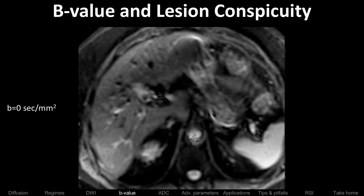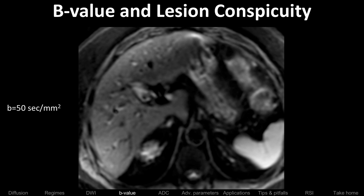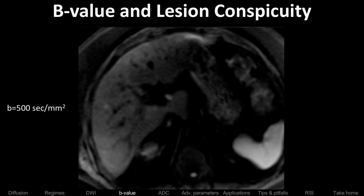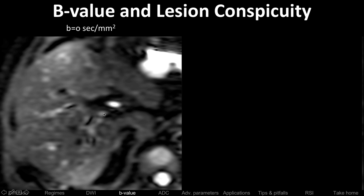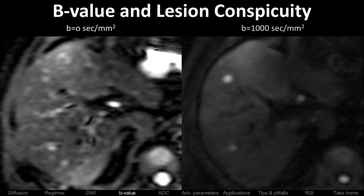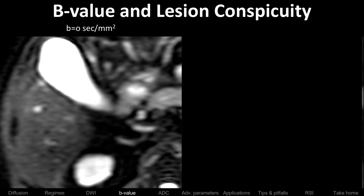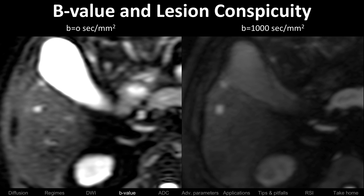Here are examples showing lesion conspicuity: no metastasis visible at B0, blood vessels starting to darken at B50, tumor becoming visible at B500. In another case, a lesion visible easily at high B value but not at B0. And comparing B50 to B600 side by side: the lesion looks brighter on B600 relative to background, but this is an optical illusion — there's no question the absolute signal is lower on B600.